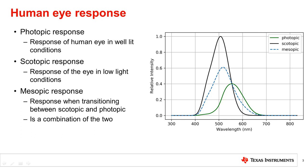This is similar to the spectral emission plots of light sources that we saw in the previous video. The difference is that this plot shows the responsivity of the eye to different wavelengths of light, rather than the wavelengths of light emitted from a source.